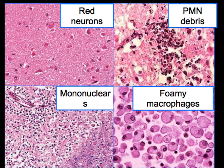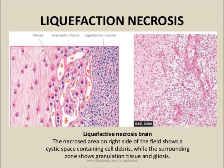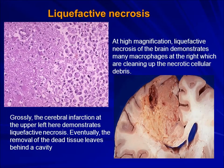After a few hours, there are polymorphonuclear leukocytes, then mononuclear cells. Mononuclear cells consist of macrophages, lymphocytes, and plasma cells. They are replaced by foamy macrophages because they clear the debris. Here you can see foamy macrophages, and in the center there is liquefactive necrosis.